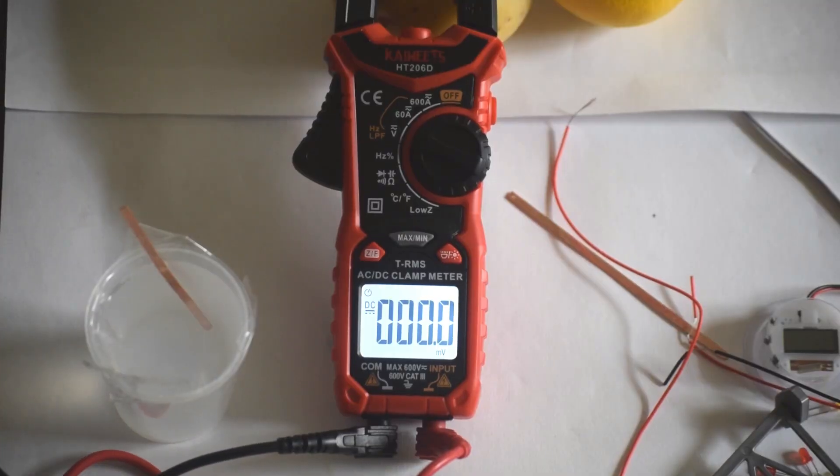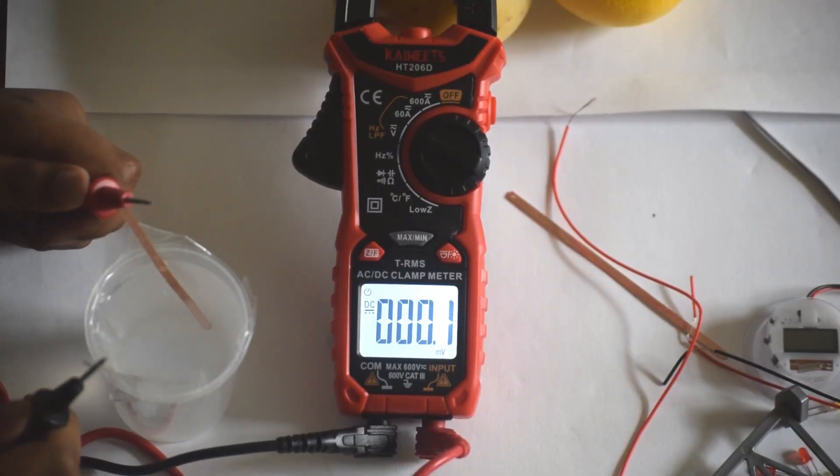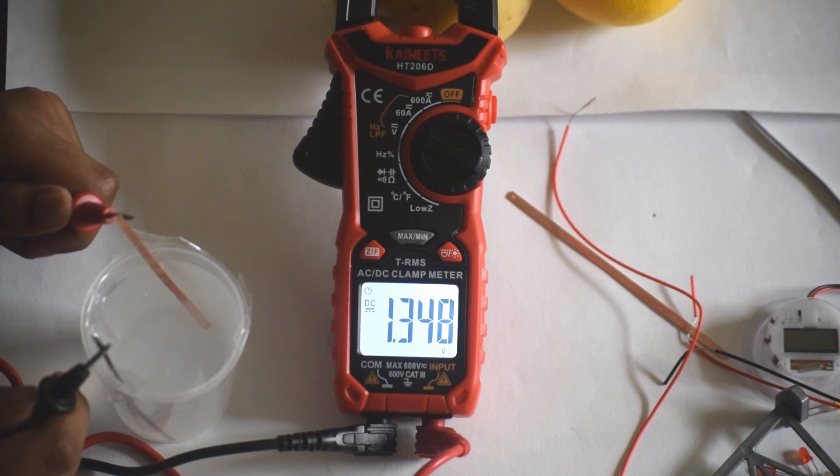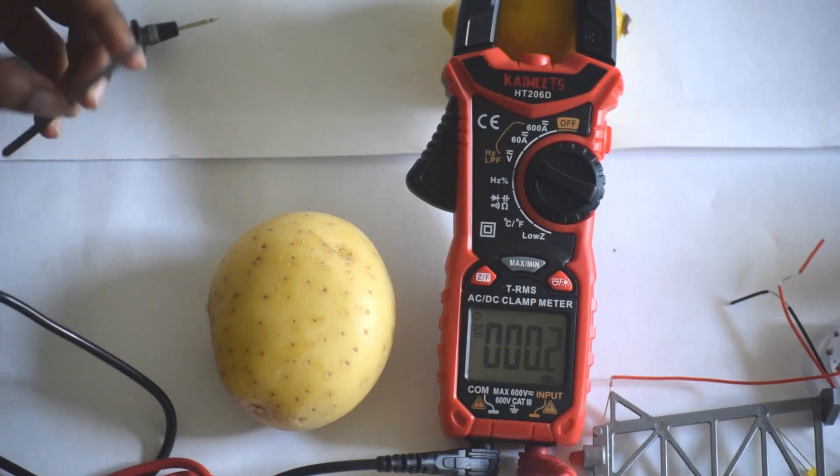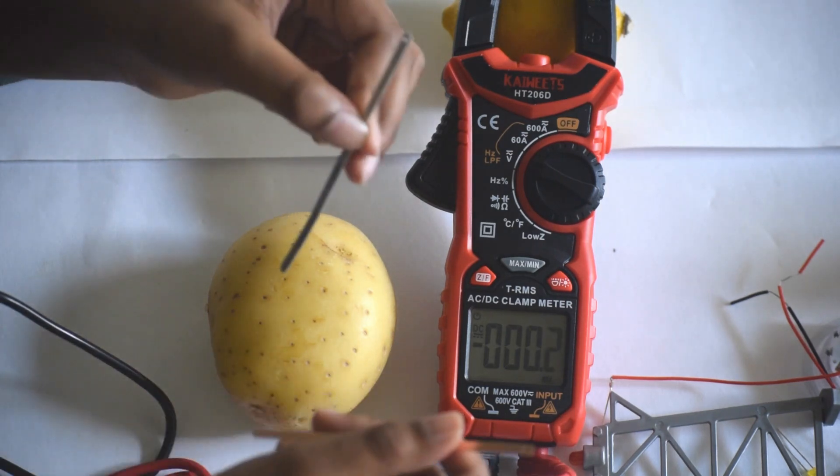Next we're going to do the same experiment with salt water. It's around 1.3 volts. Our next experiment is on potato. Let's insert these electrodes.